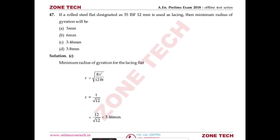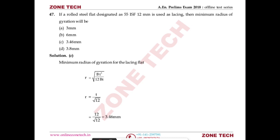Question number 47: a rolled steel flat designated as 55 ISF 12 mm — width 55 mm and thickness 12 mm — is used as a lacing member. Find the minimum radius of gyration. r = √(I/A). For a flat, I = b×t³/12 and A = b×t, so r = t/√12. With t = 12 mm: r = 12/√12 = 3.46 mm. Answer: C.